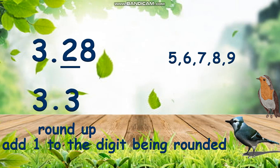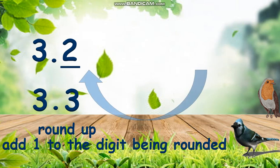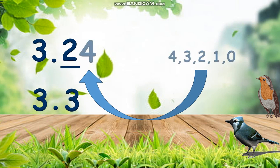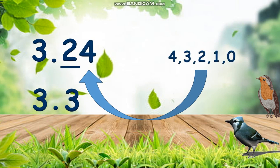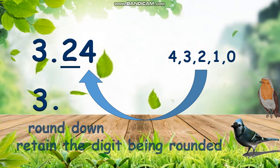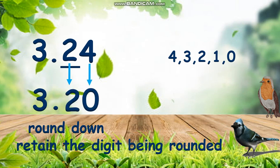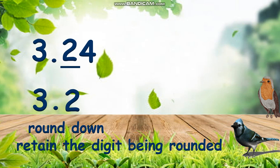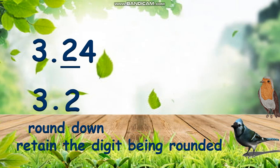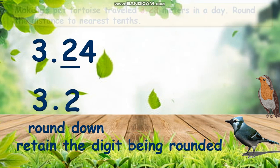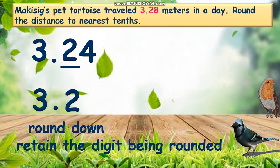What if the next digit to the right of the rounded digit is 4 or less? That's right, it will round down — everything to its right will become 0s, or we don't write any more. Therefore, the answer in rounding the decimal 3 and 24 hundredths is only 3 and 2 tenths. Let us now solve the problem before, using the rules in rounding off decimals.